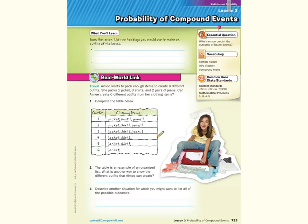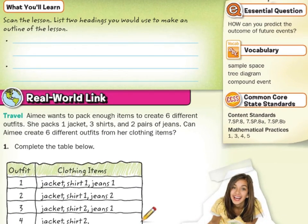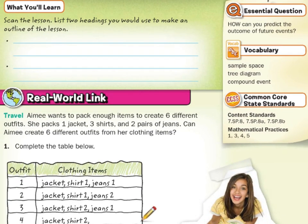Hi, Mr. Richards here. Today's lesson is on the probability of compound events. Our objective is going to be to find probabilities of compound events. If we look at two headings we would use to make an outline of this lesson, we could say that we are going to first find a sample space and also find probability.